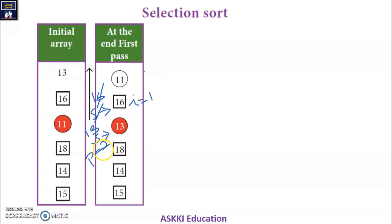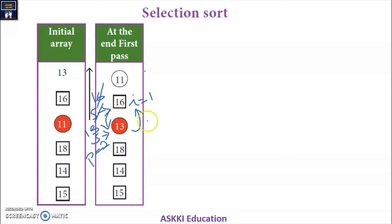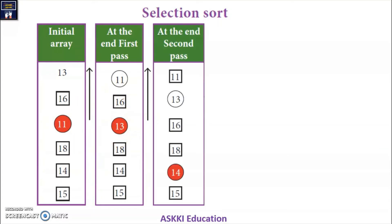Now we have to select the smallest element first — that is why it is called selection sort. So 13 will go to the first position. We exchange the values: I and the position P where the smallest was found. After the exchange, 13 has moved up and 16 has come to its previous position.